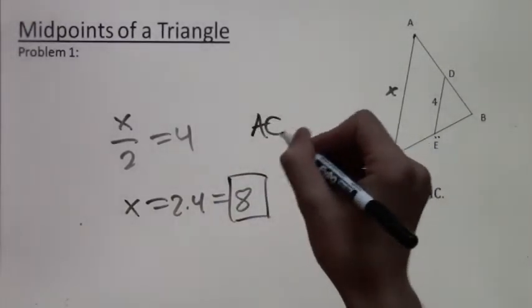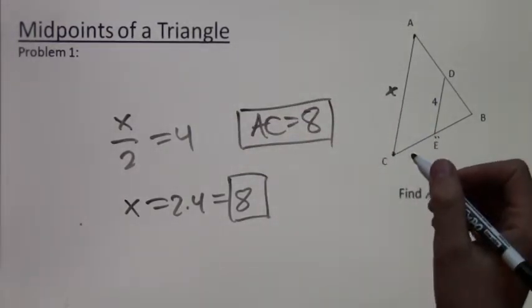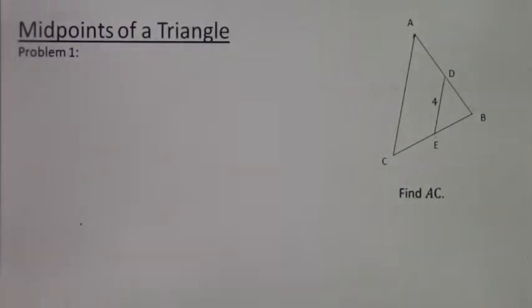And note, this is because the length of DE, the midsegment, is exactly half the length of AC, which is the base. So that was an easy problem.